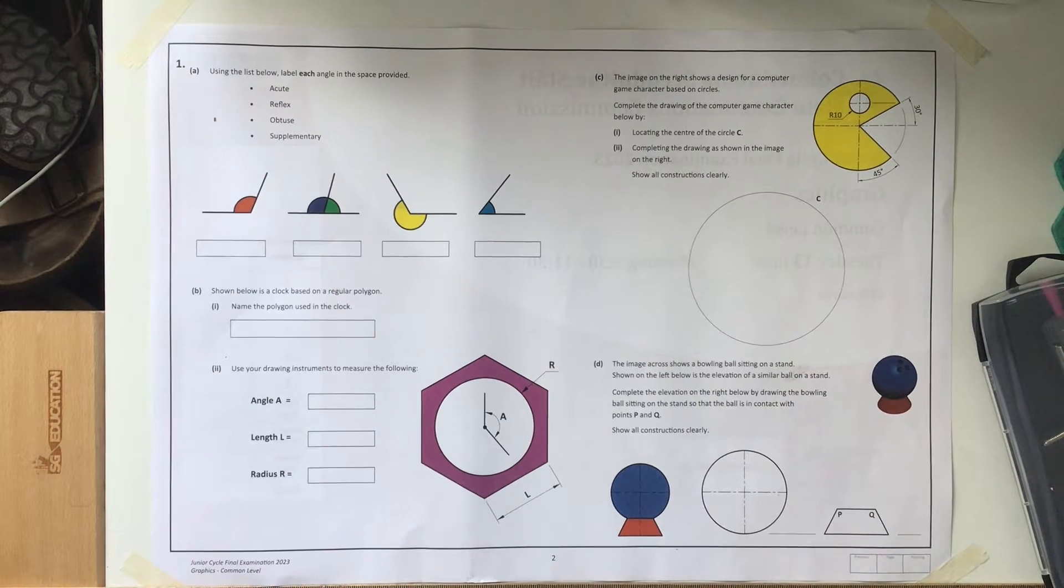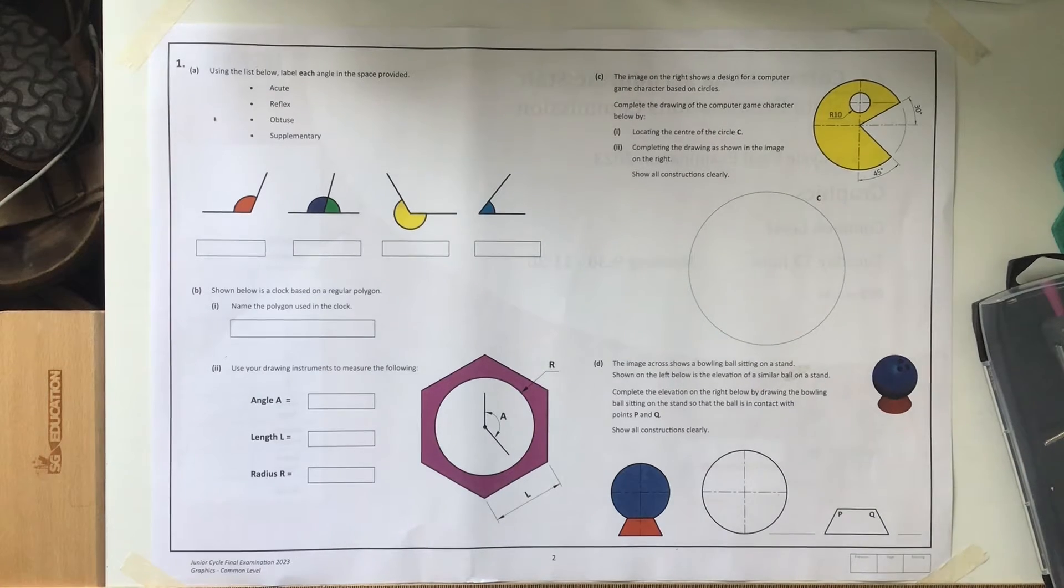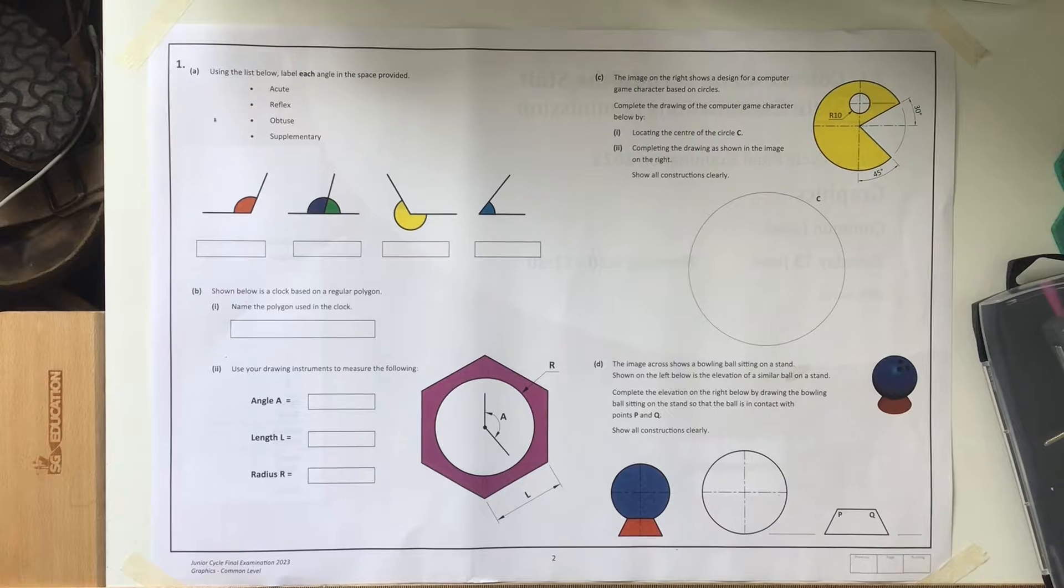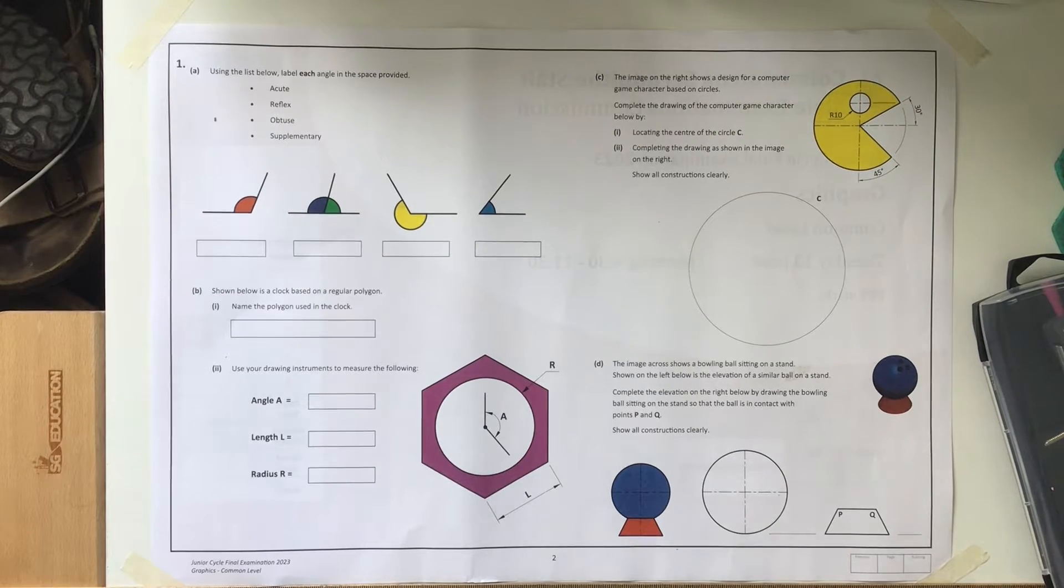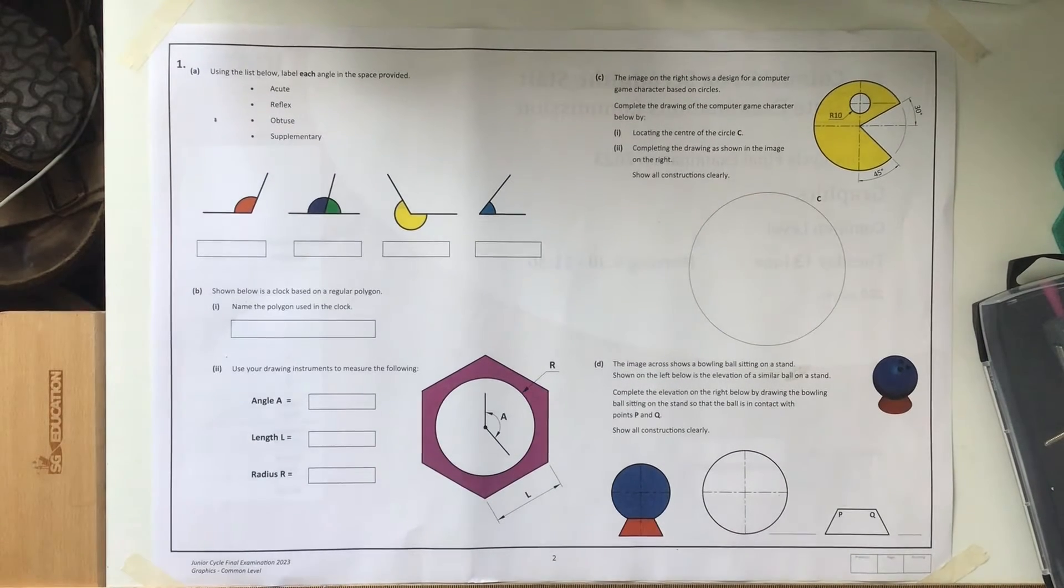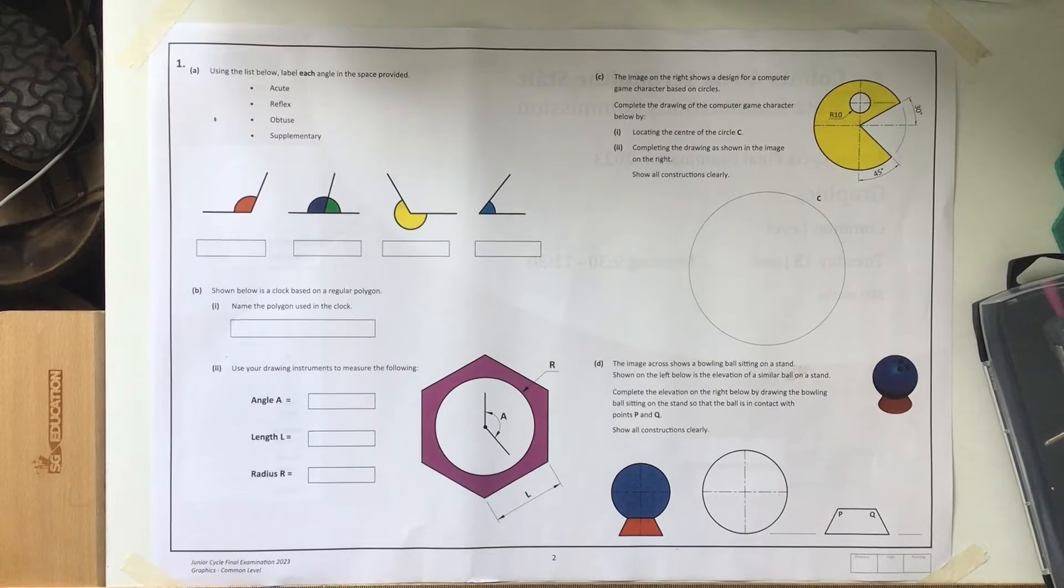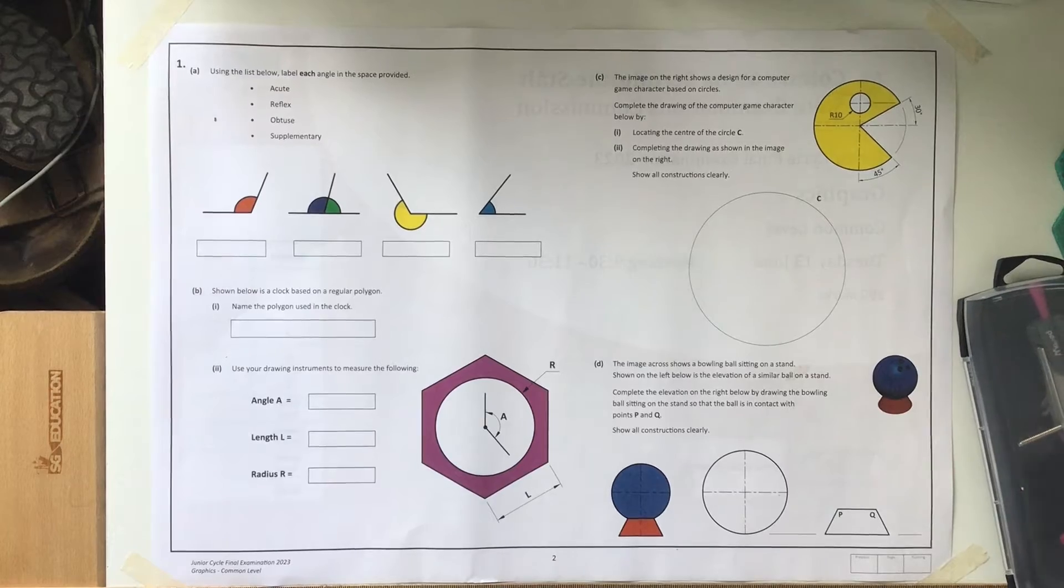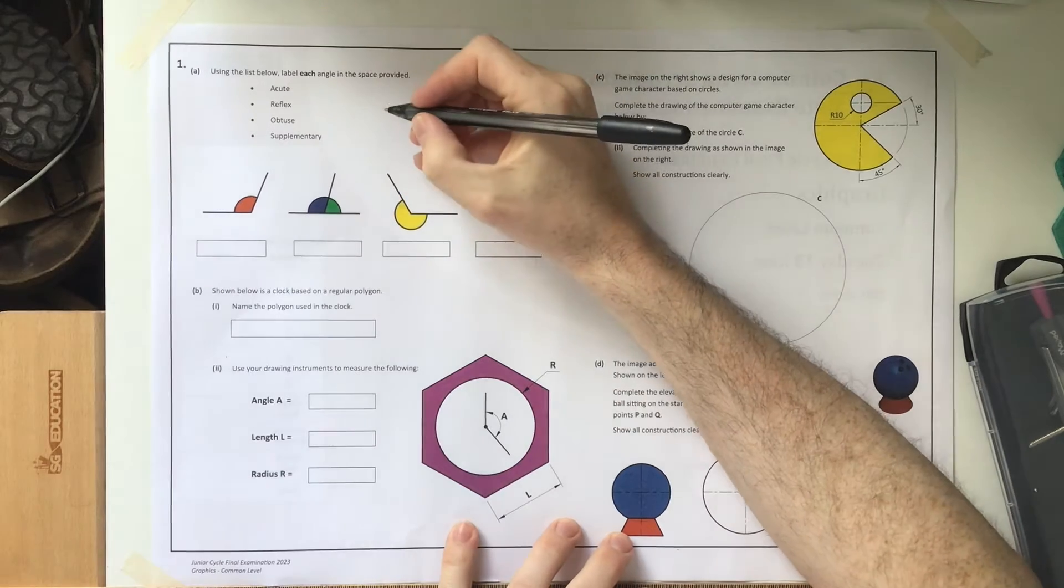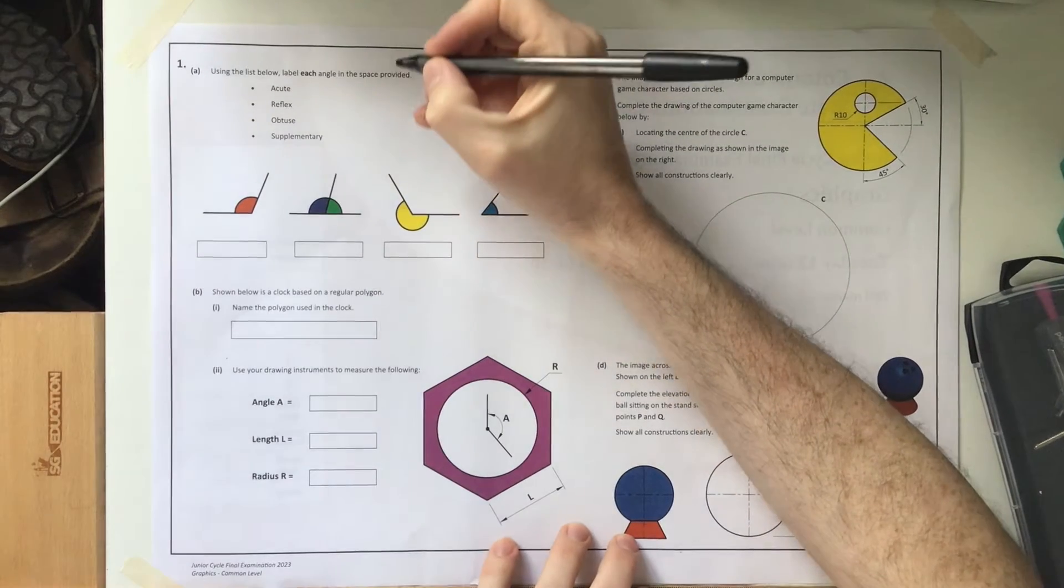Here's question one. We'll start with 1a. On the left hand side of your sheet we have 1a, 1b, and then c and d. Questions 1a and b are approachable, math-based questions looking at basic graphic geometry principles, and then we have two circular questions for parts c and d.